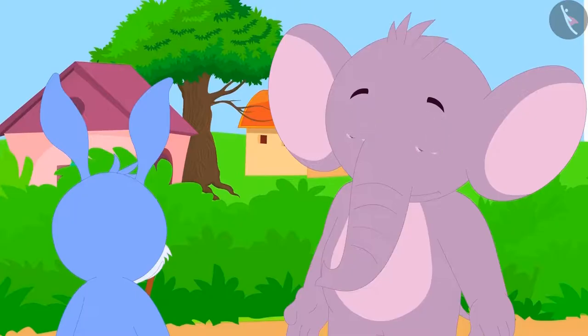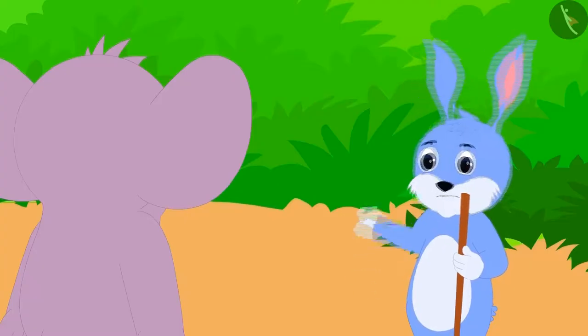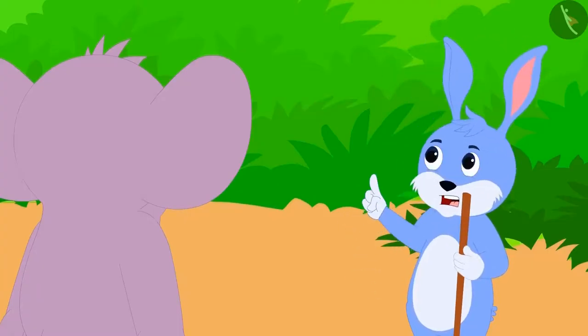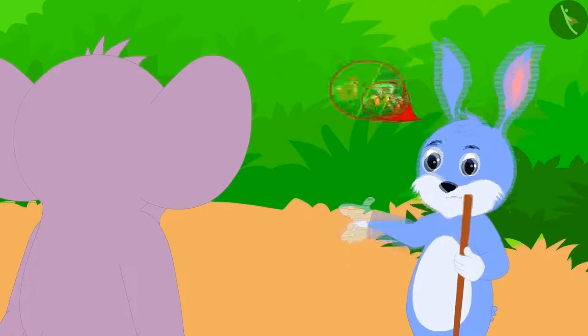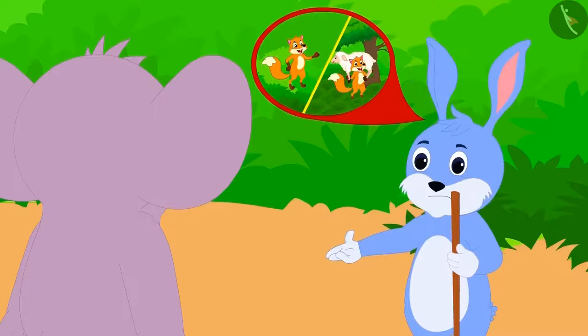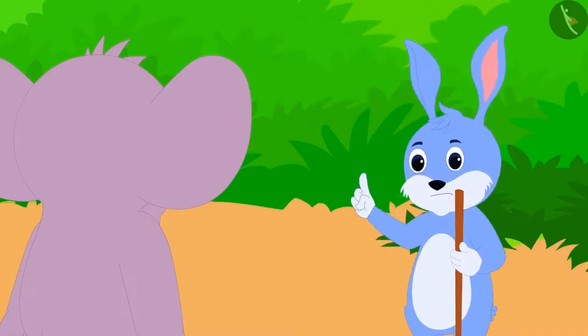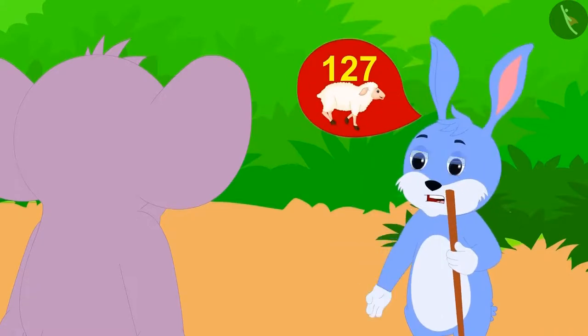When Appu asked Bunny about those 127 missing sheep, Bunny told him that a wolf came daily to the mountain area where he took the sheep to graze, and the wolf ate 127 sheep in a week.